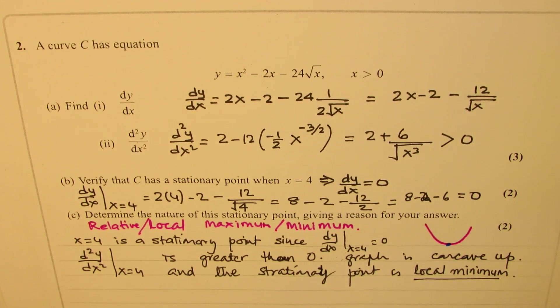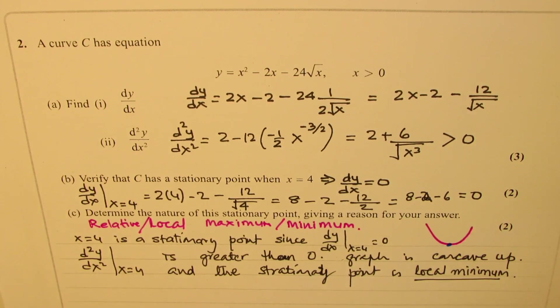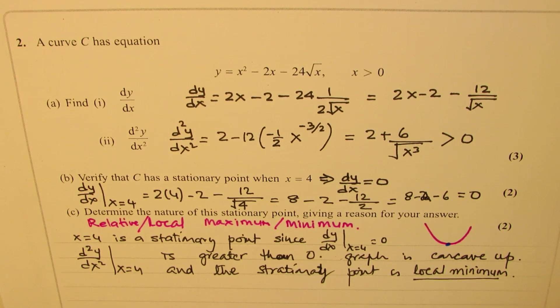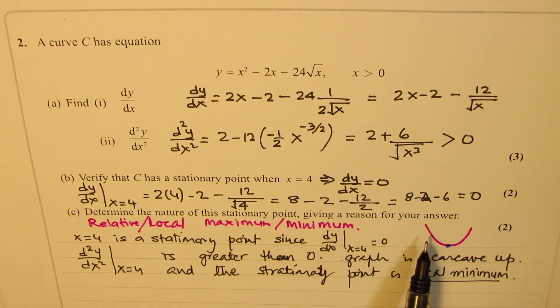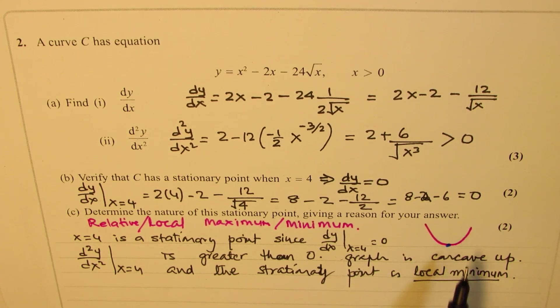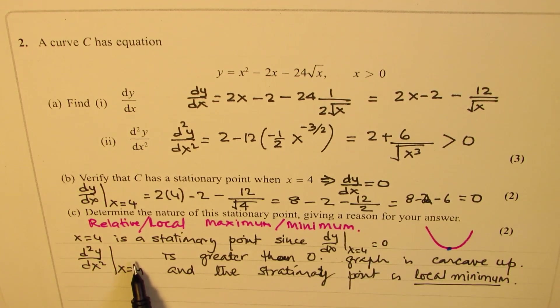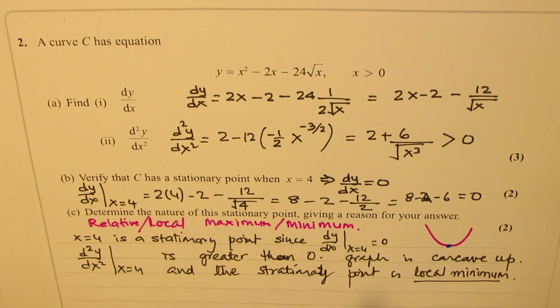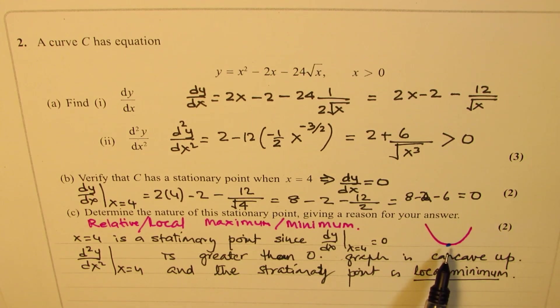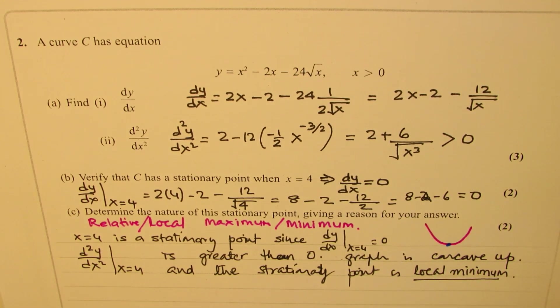Is that clear to you? So we have shown that we do have a stationary point, and analyzing this stationary point, since the graph is concave up, the second derivative being positive, we have a local minimum at this point. Is that clear to you? Perfect. So that is how we are going to answer this question.